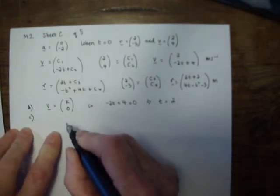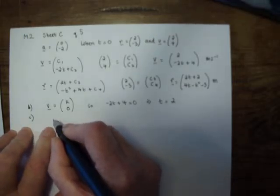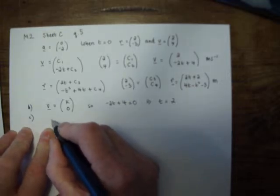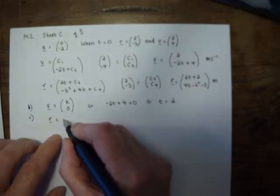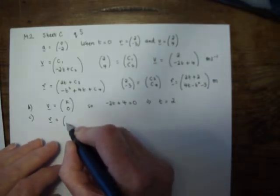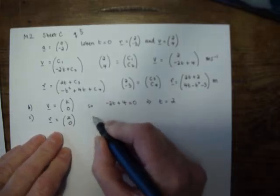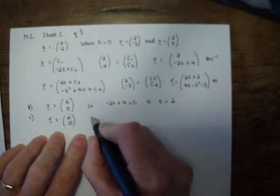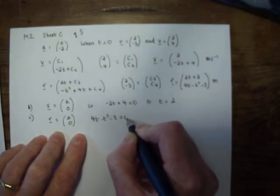When does the particle cross the i axis? So that means the particle is basically on the x axis, and its j component, its y coordinate is 0. So we know that 4t minus t squared minus 3 equals 0. That's a quadratic which we can solve.